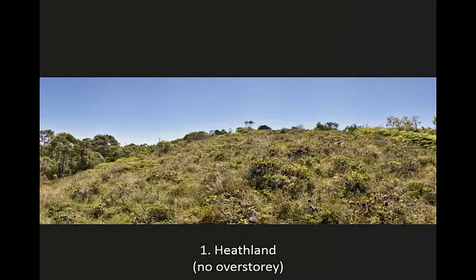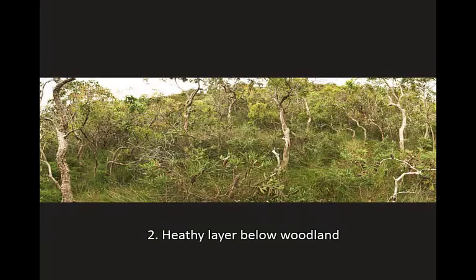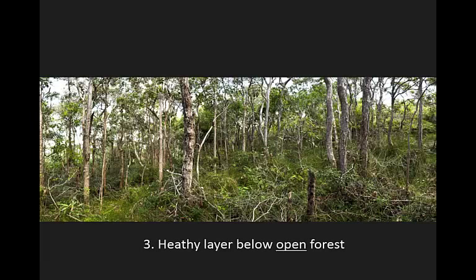Clay Heath can exist in one of three states: either as a typical heathland with no overstory — this is what dominated most of the hills to the east of Byron Bay before European settlement and up until the 1960s. It can occur as a heathy layer below woodland, which originally occurred as a narrow ecotone on lower slopes and gullies. And finally it can occur as a heathy layer below open forest. However, if the canopy becomes too dense, say above 60% cover, the heathy understory is shaded out. This type was also originally restricted to lower slopes and gullies.